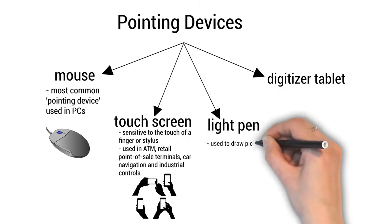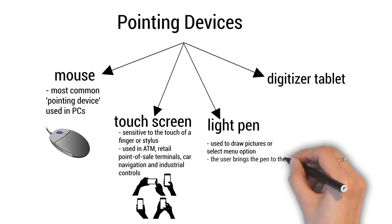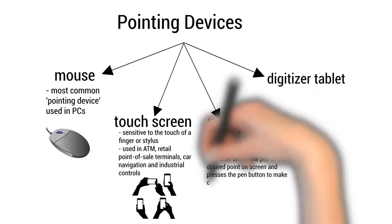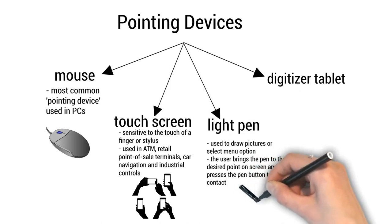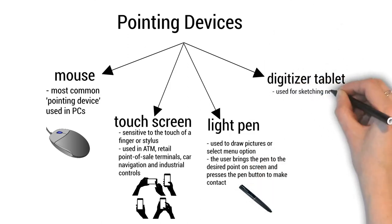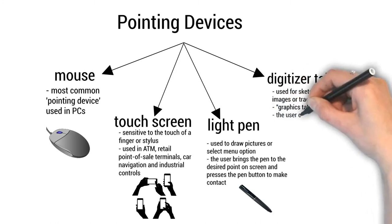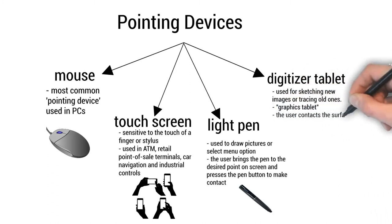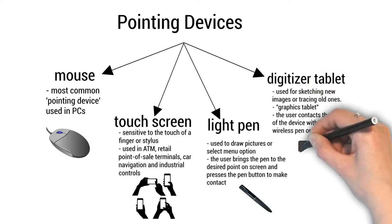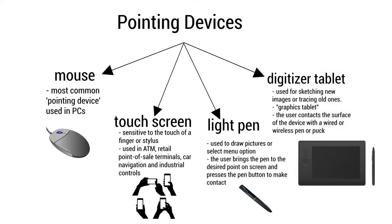A light pen is used to draw pictures or select menu options. The user brings the pen to the desired point on the screen and presses the pen button to make contact. A digitizer tablet, also called a graphics tablet, is used for sketching new images or tracing old ones. The user contacts the surface of the device with a wired or wireless pen or puck.